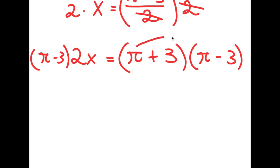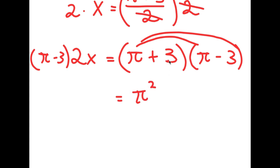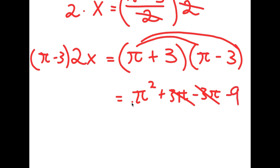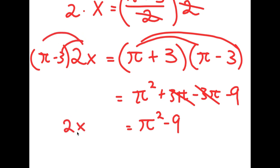Pi plus 3 times pi minus 3 — I'm going to distribute the pi. So I get pi squared plus 3pi minus 3pi, which they just simply cancel out, plus 3pi minus 3pi — these two cancel out — and then I have minus 9 at the end. So this is pi squared minus 9. And for my left-hand side, I can distribute the 2x, so I get 2x·pi minus 6x.